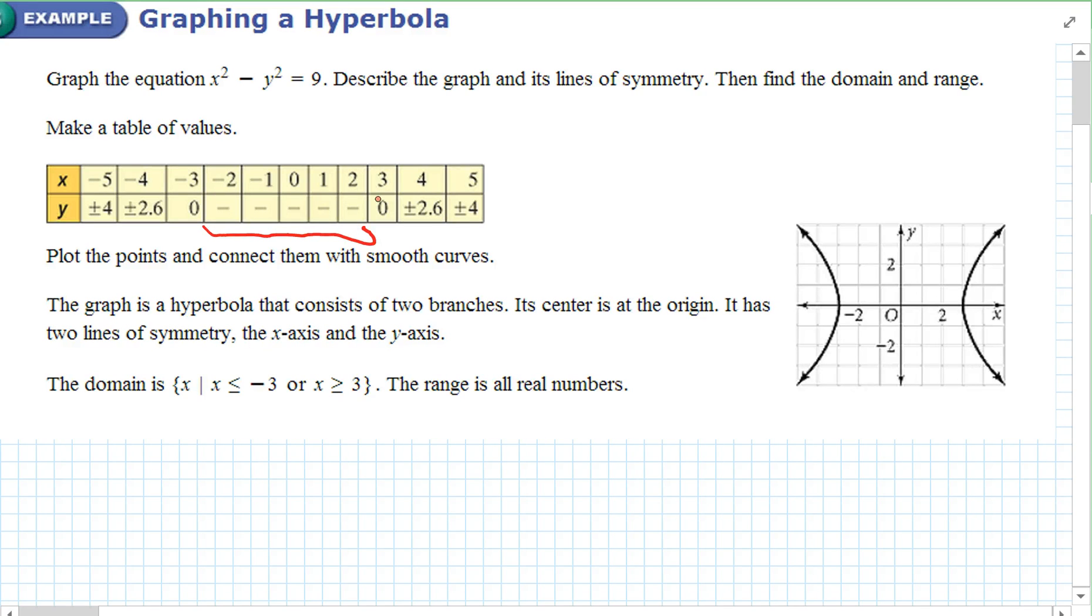When you come back, x is three, y is zero. X is four, y is plus or minus two point six. When x is five, y is plus or minus four. So when you plot the points you notice basically you have two parabolas. The graph is a hyperbola that consists of two branches. The center is at the origin and it has two lines of symmetry. Again the x-axis and the y-axis. The domain of x is it's got to be less than negative three or greater than three. The range is all real numbers.